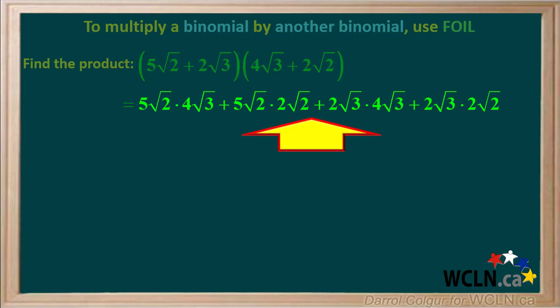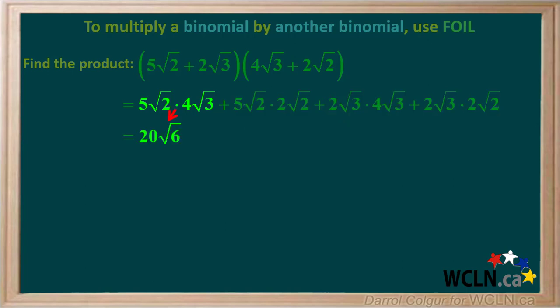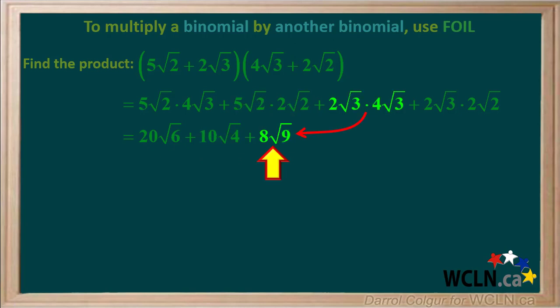We will find the product in each term. The product of the first term is 20 root 6. The product of the second term is 10 root 4. The product of the third term is 8 root 9. And the product of the fourth term is 4 root 6.